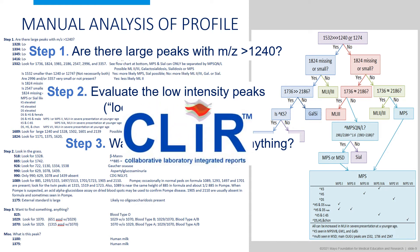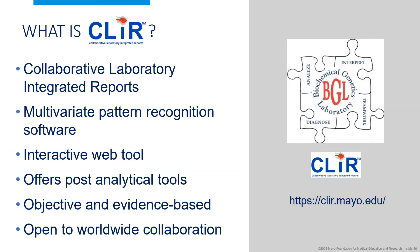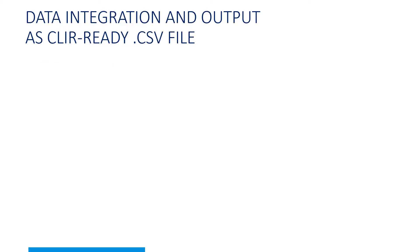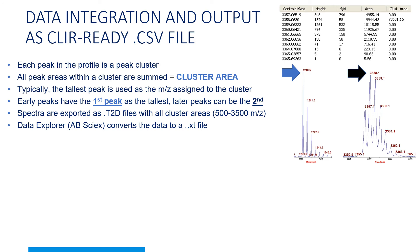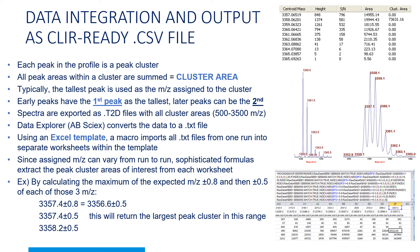In a high-volume lab, manually reviewing multiple profiles is time-consuming and can result in increased turnaround time. This is where our bioinformatics software, CLEAR, helps out. CLEAR is a multivariate pattern recognition software and interactive web tool that offers post-analytical tools that are both objective and evidence-based. CLEAR is freely available to laboratories willing to share data and is easily accessible via internet connection. The peak intensities on the MALDI profile can be captured, exported, and formatted as a CSV file for analysis. The sophisticated macros and formulas basically lasso the largest peak cluster for every molecular weight of interest, giving it a numeric value on a CLEAR-ready CSV file.